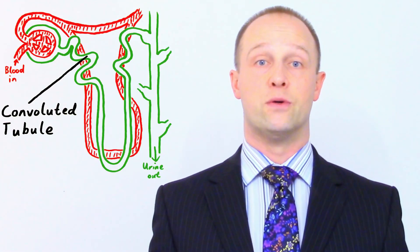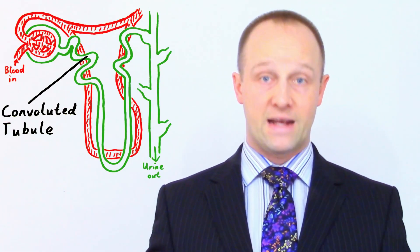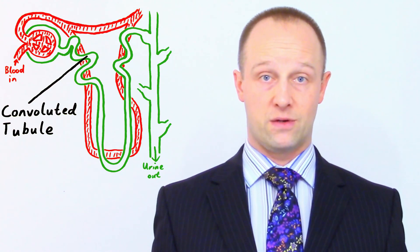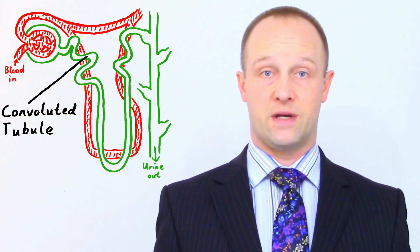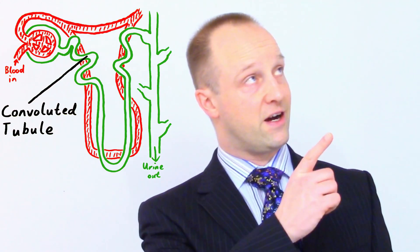Active transport is also used to get glucose from the convoluted tubules in your kidneys back into the bloodstream in the capillaries. I've got a video which explains kidneys and the renal system which you can see if you click this card.